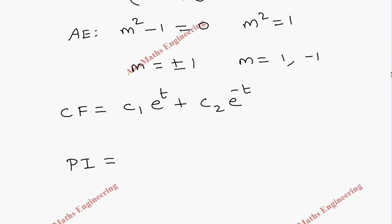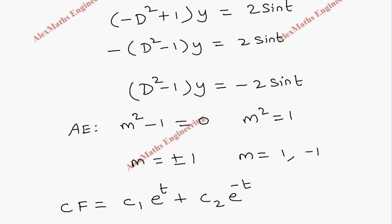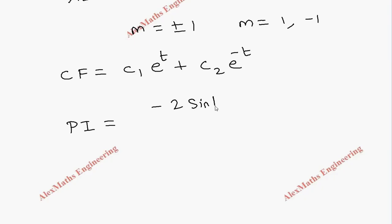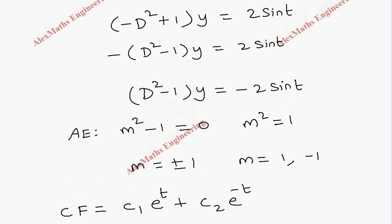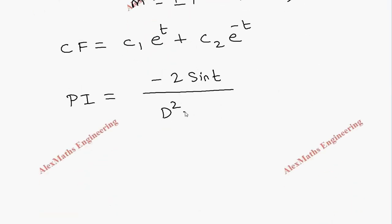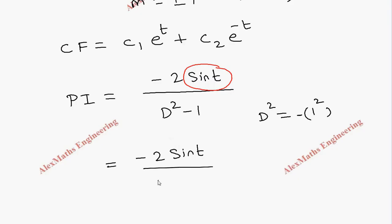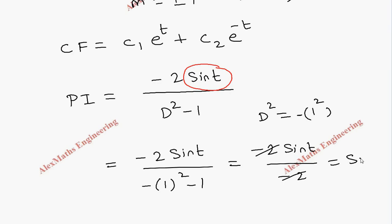Coming to the particular integral, the right side of the equation has minus 2 sin t. So PI equals minus 2 sin t divided by (D² minus 1). As per the procedure, we substitute D² as minus 1 (since the coefficient of t is 1). So it becomes minus 2 sin t divided by (minus 1 minus 1), which is minus 2. The minus 2 cancels, and we are left with just sin t.